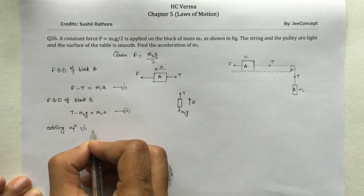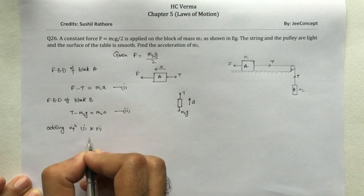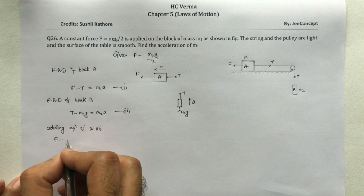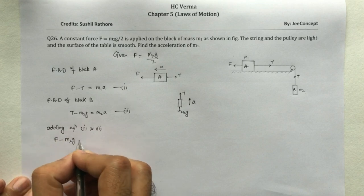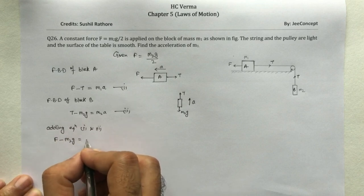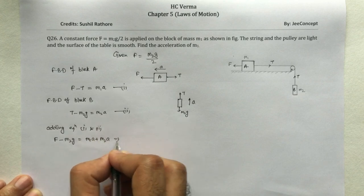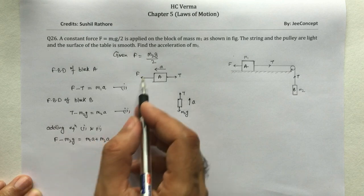Now adding equation 1 and 2, what we will get? T will cancel out, so this will become F - m2g = m1*a + m2*a.